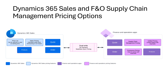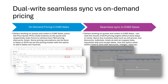Dual-write integration is generally compatible with Supply Chain Management and Commerce pricing. However, it only has limited support currently for Unified pricing. There are two dual-write options for syncing pricing information between Sales and Finance and Operations Supply Chain Management. We have On-Demand pricing, which has been available for some years now. It allows sellers to work on quotes and orders in Dynamics 365 Sales, then press the Price Quote or Price Order buttons so that data such as pricing, discounts, and totals gets retrieved from F&O on-demand.